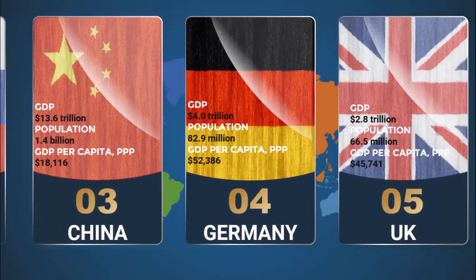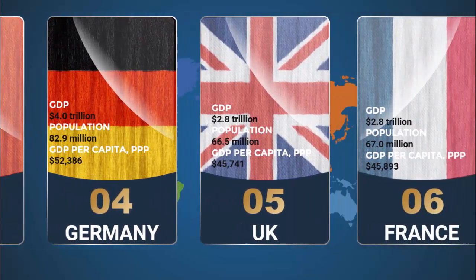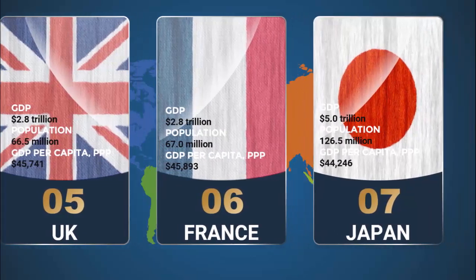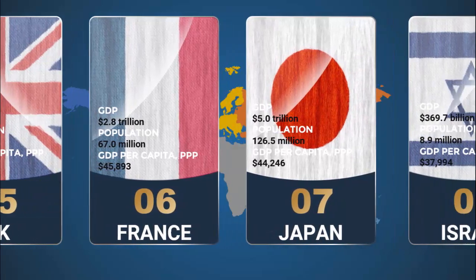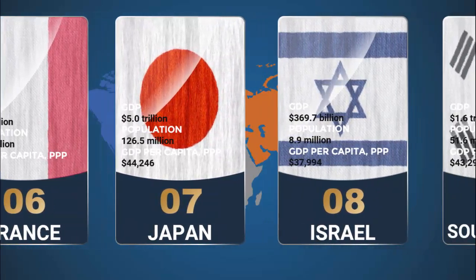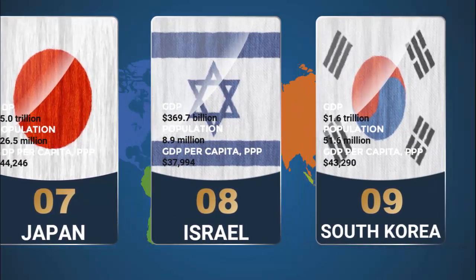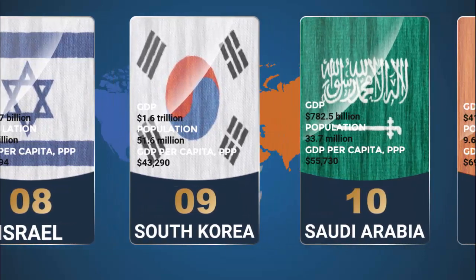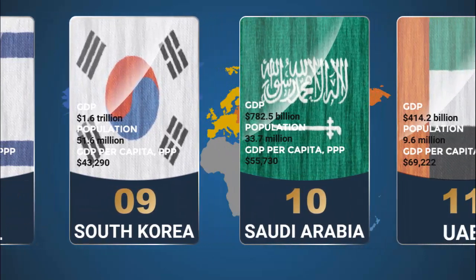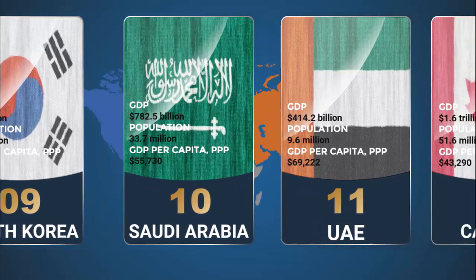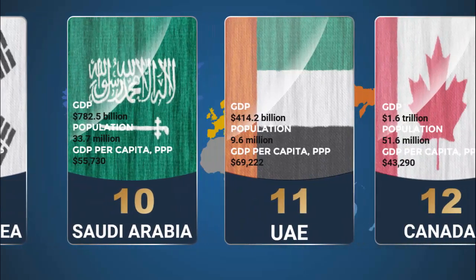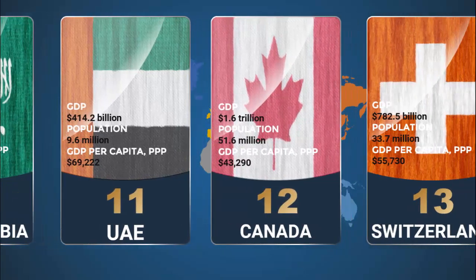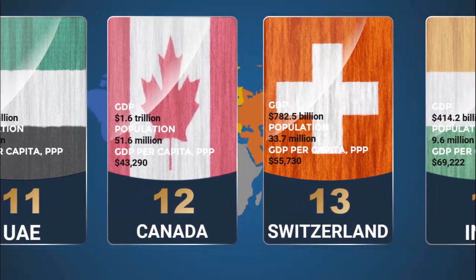I've put 20 countries, but depending on your requirement you can add as many countries as you want. You can replace the image with any image you want and replace the text with any text. These are the top 20 powerful countries, and I've given the source. Let me show you what the source is and how I downloaded the flags.